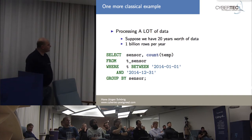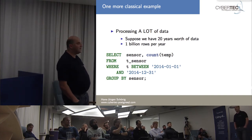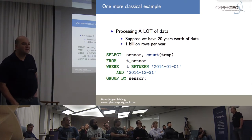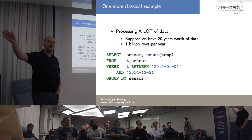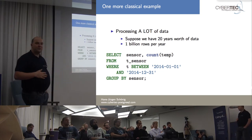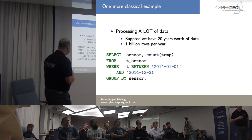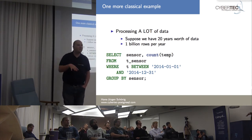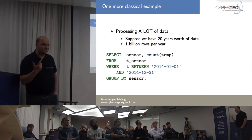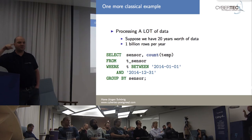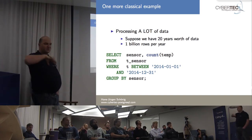Here's another very classical example with a large amount of data. Suppose we have 20 years of sensor data, adding a billion rows per year, kept for 20 years — so roughly 20 billion rows total. What you want to know is: for every sensor, how many entries did we get for this year? It's a very typical query: you have a large dataset, you extract a fraction, and do some analysis on it.